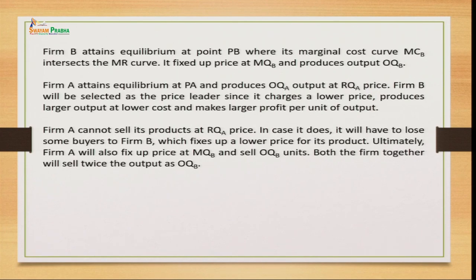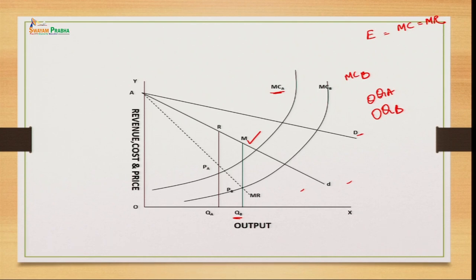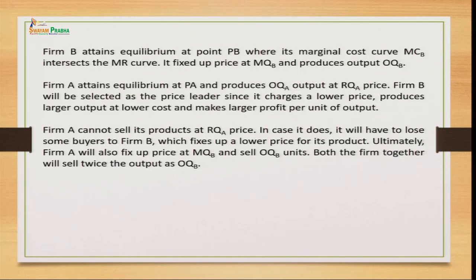To confirm: firm B attains the equilibrium point at PB where its marginal cost curve MCB intersects the MR curve, producing OQB output at price MQB. Firm A produces OQA output at price RQA. We are finding the leading firm who is doing the best — producing more at lesser pricing and generating more profit. That is the price leadership model.